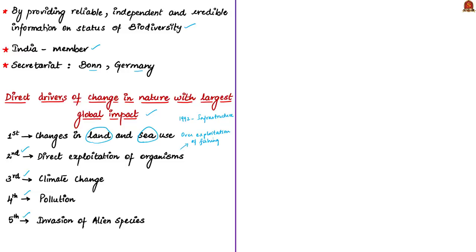Humans have caused global warming of approximately 1 degree Celsius by 2017 compared to pre-industrial levels, resulting in increased frequency and intensity of extreme weather events. With respect to pollution, greenhouse gas emissions, untreated urban and rural waste, pollutants from industrial, mining and agricultural activities, oil spills and toxic dumping have had strong negative effects on soil, freshwater and marine water quality and the global atmosphere. About one-fifth of the Earth's surface is at risk of plant and animal invasions, severely impacting native species, ecosystem functions and nature's contributions to human beings.